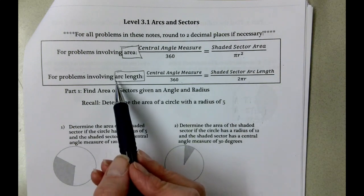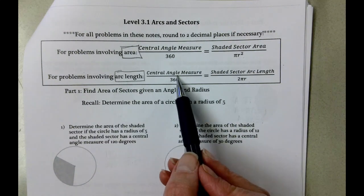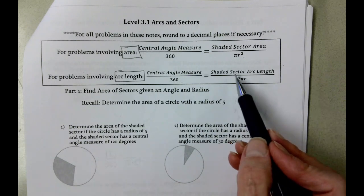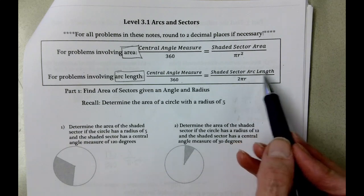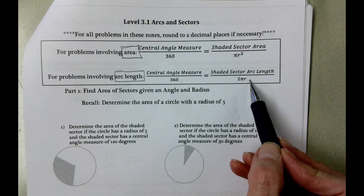When we're looking at arc length, then we're still going to do the central angle measure over 360. And then we're going to do the shaded sector arc length divided by the formula for the circumference of the circle, which is 2πr.